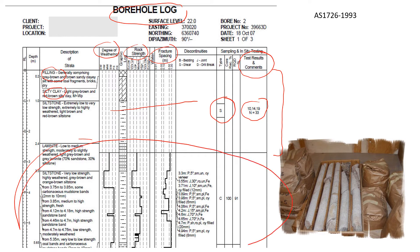What I would like to talk about in this video is this part of the borehole log. In the description you will see siltstone and slight variations of siltstone. Because it's rock, you will see different levels of weathering — the symbols here are EW, HW, MW, and SW. Another thing you will see is rock strength, ranging from extremely low to very low to low, which I will explain later.